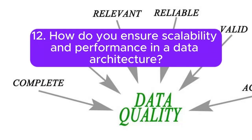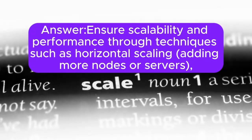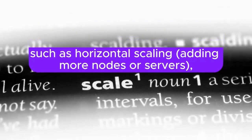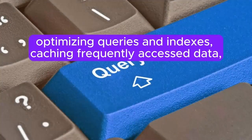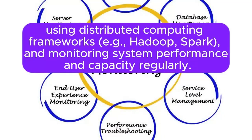Question 12: How do you ensure scalability and performance in a data architecture? Scalability and performance are ensured through techniques such as horizontal scaling (adding more nodes or servers), vertical scaling (increasing resources on existing nodes), partitioning or sharding data across multiple servers, optimizing queries and indexes, caching frequently accessed data, using distributed computing frameworks such as Hadoop and Spark, and monitoring system performance and capacity regularly.